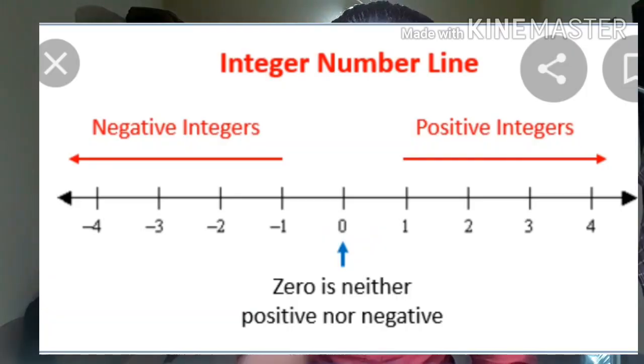Now we will see the number line of integers. The number line shows both negative numbers and 0. On the number line, -4 is on the left, positive 4 is on the right, and 0 is in the middle. That is why we call 0 neither positive nor negative — it is the middle.